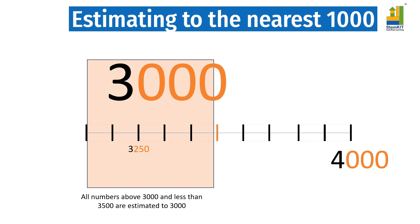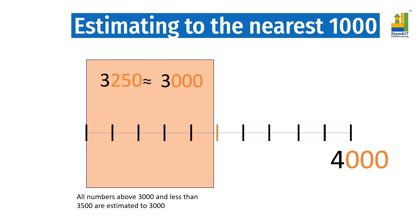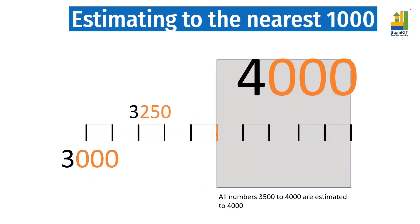So, 3250, estimated to the lower thousand, is equal to three thousand. All numbers above the midpoint, here 3500, will be estimated to the upper thousand.